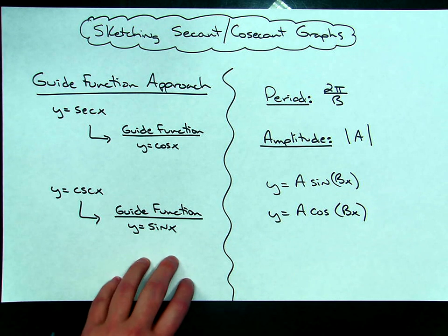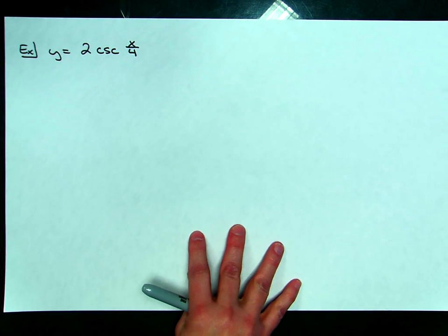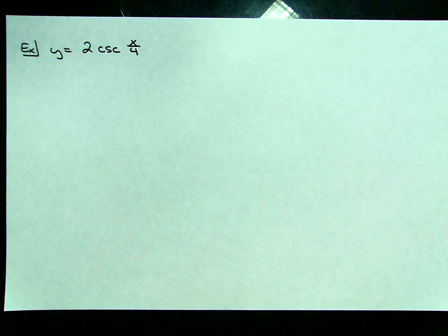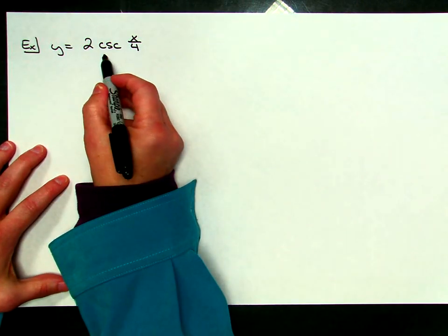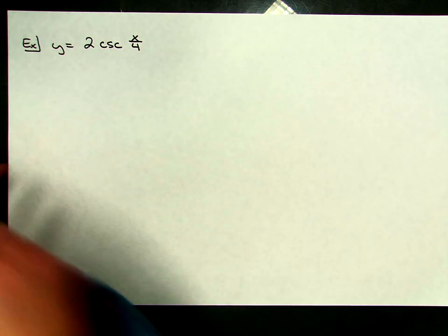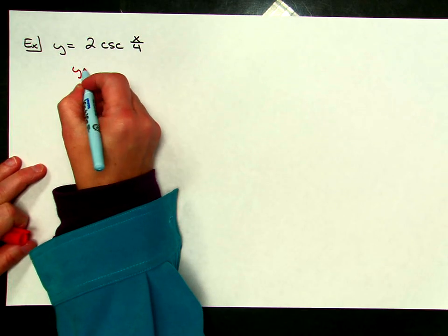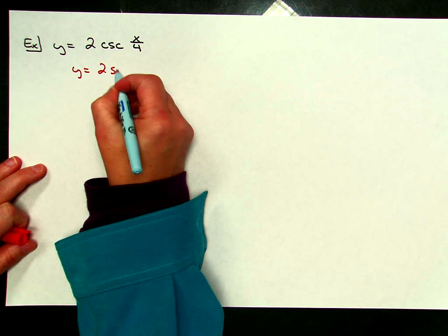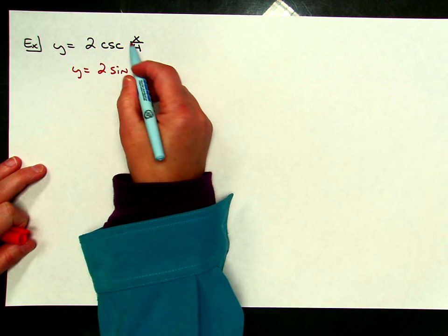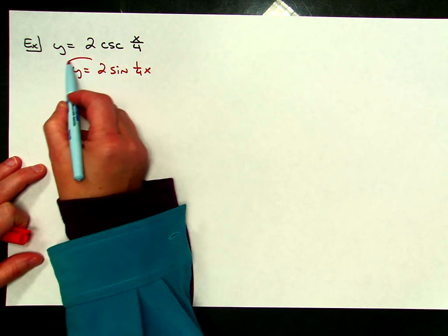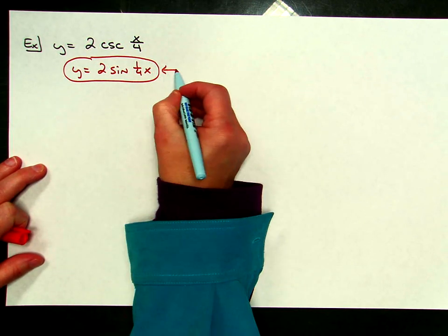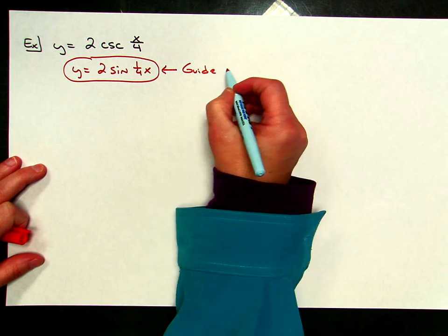For our first example, we're going to take a look at y equals 2 cosecant of x over 4. Our guide function for this one is going to be sine, so I'm going to write that in red: y equals 2 sine of one-fourth x. This is going to be our guide function that we're going to use to help us sketch that cosecant function.